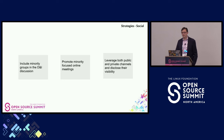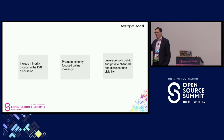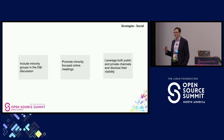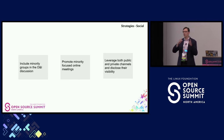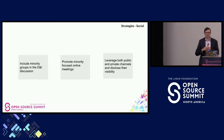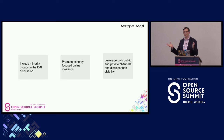For social barriers, recommendations include including minority groups in the DEI discussion, promoting minority-focused online meetings, leveraging both public and private channels, and disclosing their visibility. There are lots of things we can do — the talk right before this one had many more suggestions. My goal was for you to think about this framework: who has the agency to do something — is that the foundation, project, or individual level — and is it a technical, process, or social barrier? Thank you so much for joining me today. I hope you have a wonderful evening.